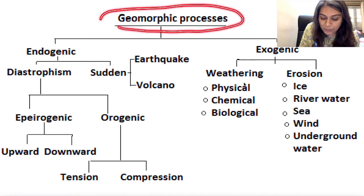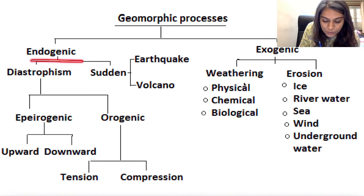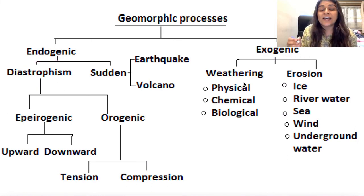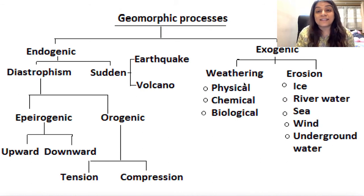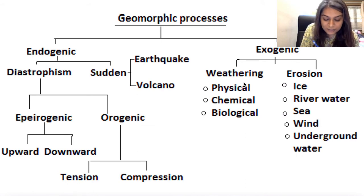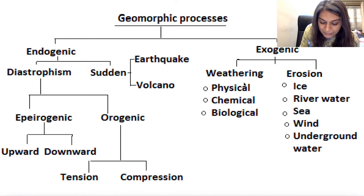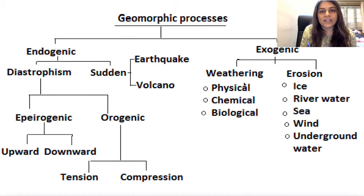Geomorphic processes is what we are going to do in this video. Geomorphic processes has two types: one is the endogenic process and the other is the exogenic process. Exogenic process is basically everything that happens outside the surface of the earth, and endogenic is everything in the interior. In endogenic processes there are two types of movements: one is diastrophism and another is sudden movement. Sudden movement mainly includes earthquakes and volcanoes.